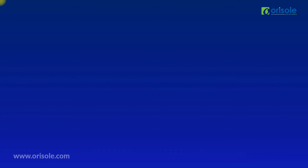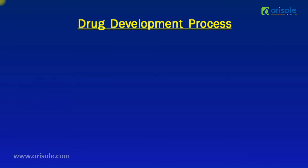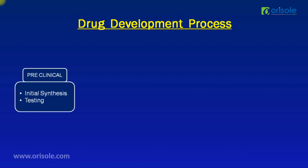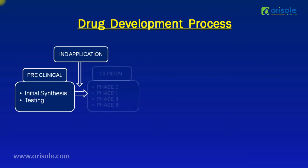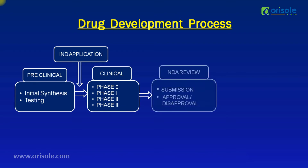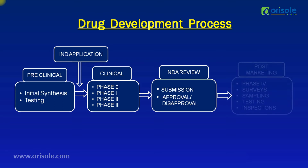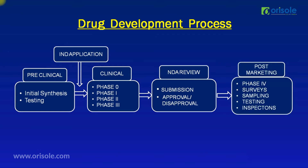Let us see the drug development process overview. It starts with preclinical trials, in which the initial synthesis of the drug molecule is done and the drug molecule is tested on animals. The data from preclinical trials is submitted to the regulatory authority as an Investigational New Drug (IND) application. After getting approval, the clinical trial phases start — phase 1, phase 2, and phase 3. Data from these phases is submitted for New Drug Application (NDA) review. After regulatory approval, the drug is released into the market, followed by phase 4 post-marketing surveillance studies.